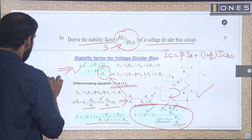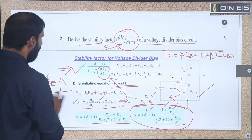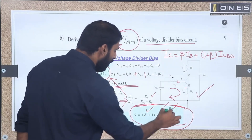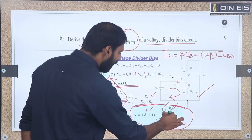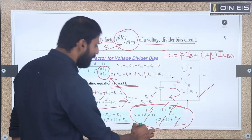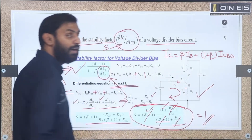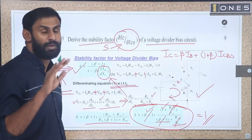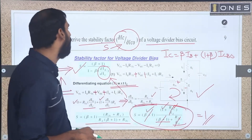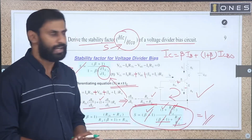We will choose RE to be very high in value. If we choose a very high value of RE, we can neglect the RTH term, and the stability factor approaches 1 in the ideal case. So if the stability factor equals 1, it indicates ideal thermal stability.